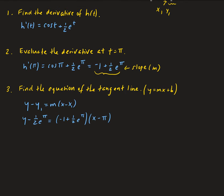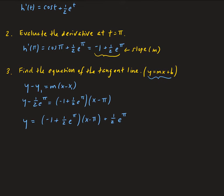Now we want to write this in slope-intercept form, so we just need to isolate y. We get y equals minus one plus one-half e to the pi, times x minus pi, plus one-half e to the pi — adding one-half e to the pi to both sides. Now we distribute so that we can get the equation in slope-intercept form.